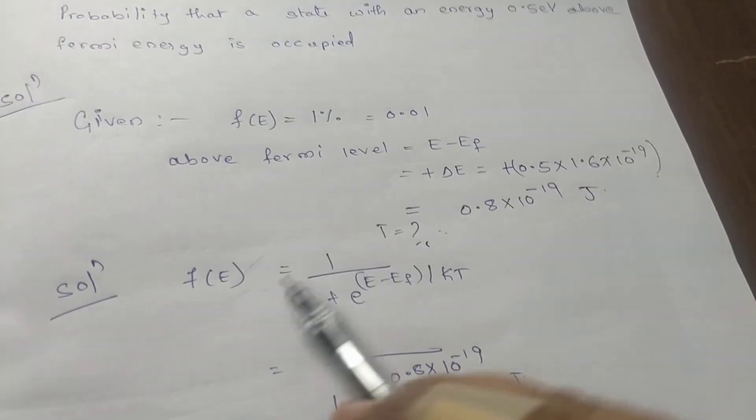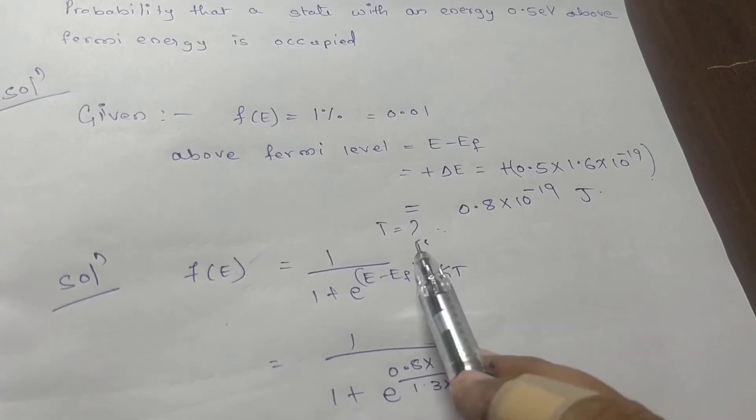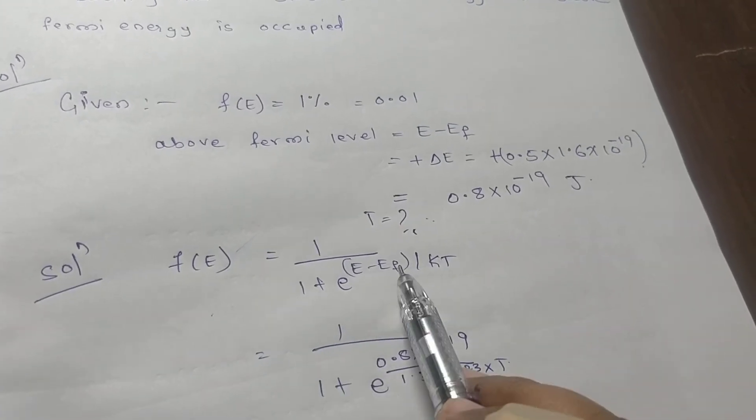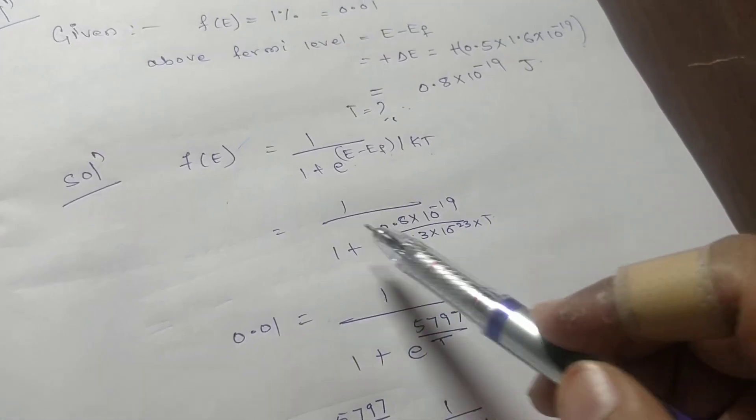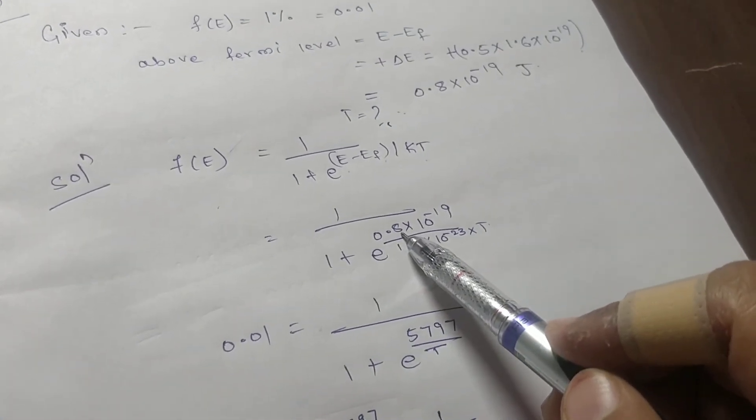So start with the equation: f of e is equal to 1 over 1 plus e to the power e minus ef over kt. Okay, substitute the value for e minus ef. We have this equation.